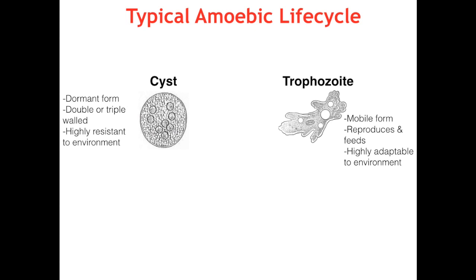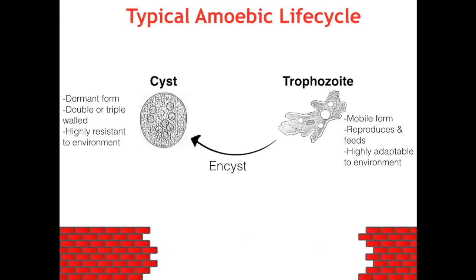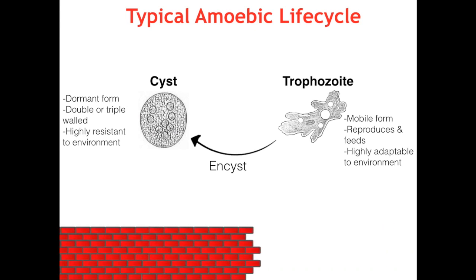If a trophozoite is presented with an environment it cannot adapt to — like changes in pH, overcrowding, or lack of food — it will undergo encystment and become its dormant cyst form. It basically secretes a thick wall around itself to protect itself, enabling it to survive longer. Likewise, when environmental conditions become favorable, the cyst form will undergo excystment, and the trophozoites inside will escape through the central pore and break free, allowing for mobility, reproduction, and feeding.